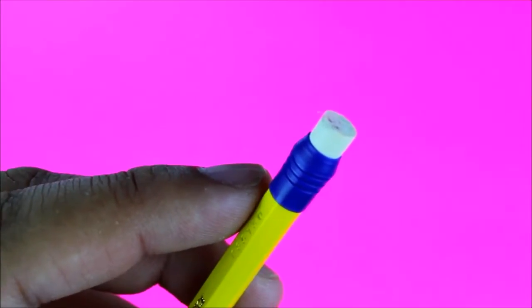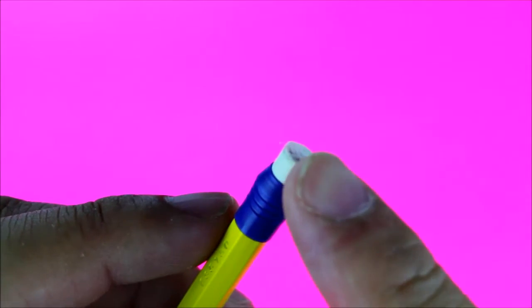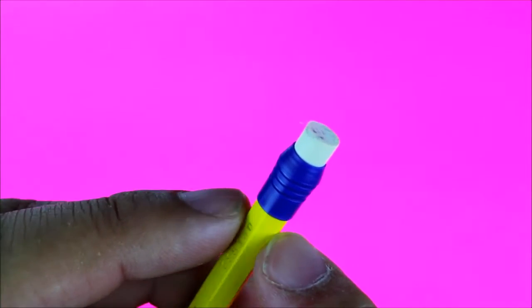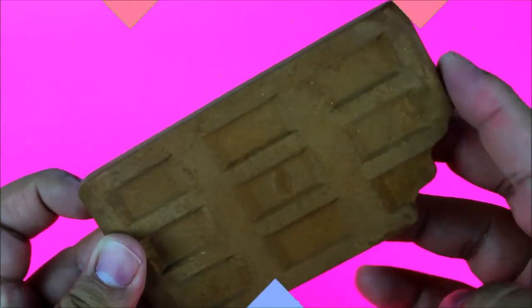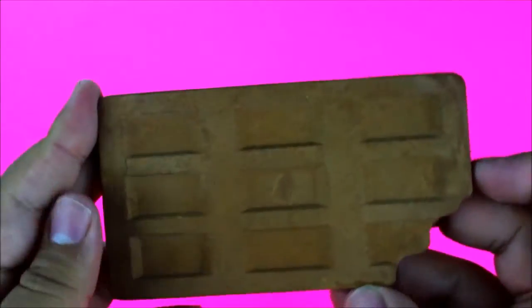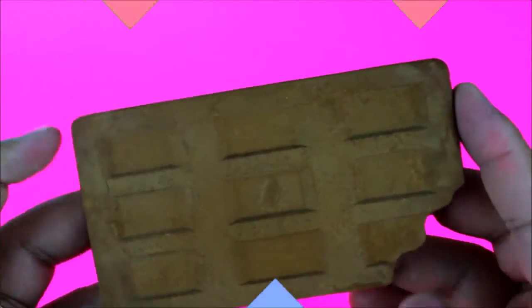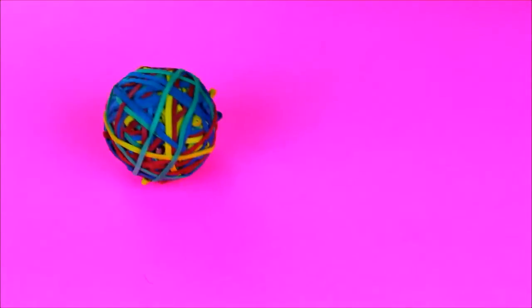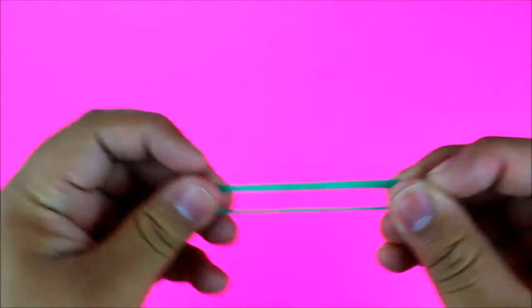We've all been there - either you completely destroyed the eraser on your pencil, or it didn't come with one, and you don't have a fancy eraser. This is what you can do: if you have some rubber bands, or your teacher has some, you can actually use that as an eraser. I'm going to show you how.